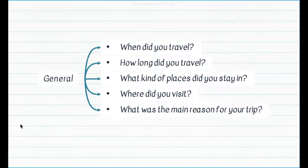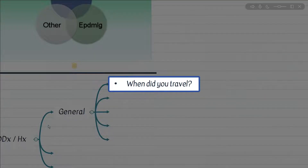If a patient with a history of recent travel mentions traveling during the rainy season, what are the differential diagnosis considerations? Rainy season travel is associated with mosquito-borne infections such as malaria, dengue, Japanese encephalitis, chikungunya, and West Nile virus.